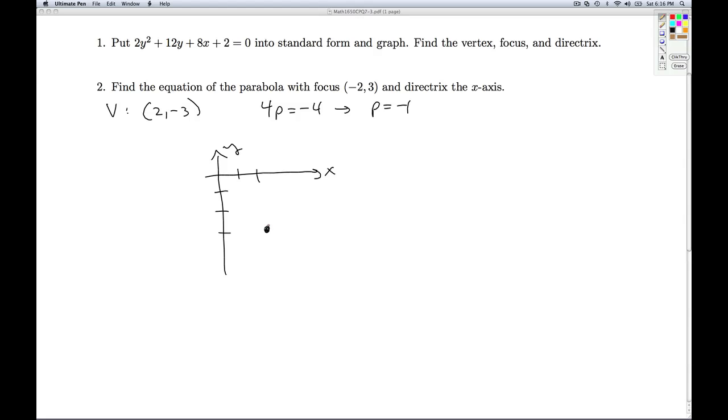It's right there. I'm going to be opening to the left. So the focus is going to be p units to the left here. So p was -1. That means I'm going to move 1 unit to the left to get to the focus. So what's the focus going to be? I start at 2, -3, move 1 unit to the left. I'm going to be at 1, -3.